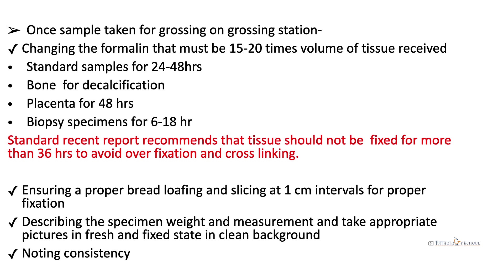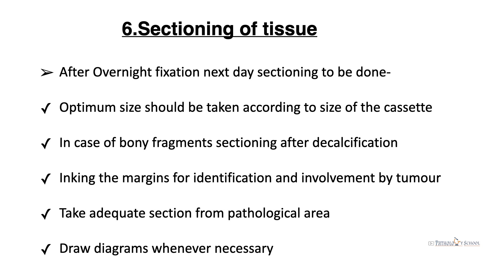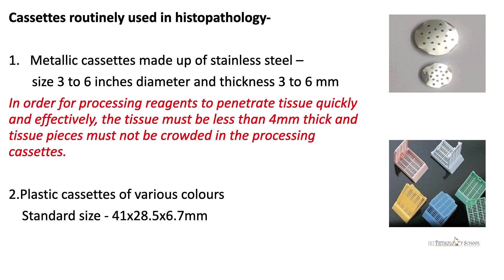For larger specimens like modified radical mastectomy (MRM), we describe the specimen weight and measurement and take appropriate pictures in fresh and fixed states on a clean background, noting consistency. For sectioning, the optimum size should be taken according to the cassette size. In the case of bony fragments, sectioning is done after decalcification. Inking the margins for identification and tumor involvement is very important for larger specimens, and diagrams are drawn whenever necessary.